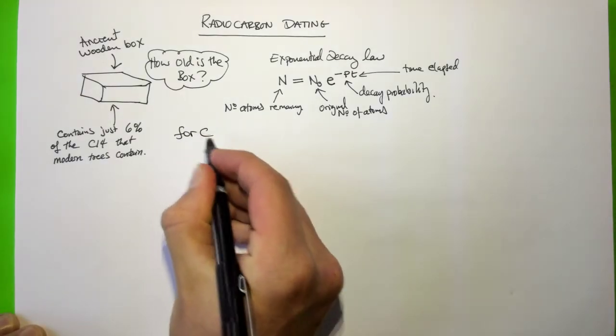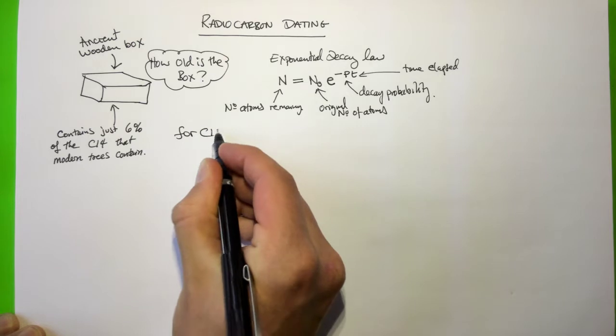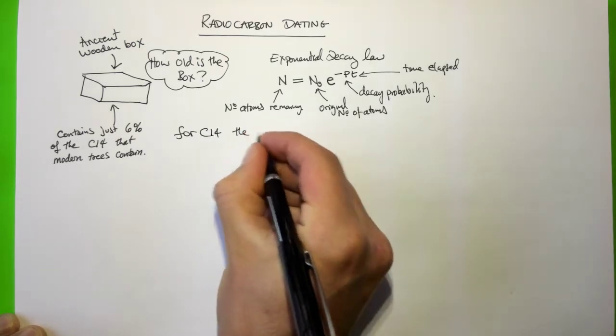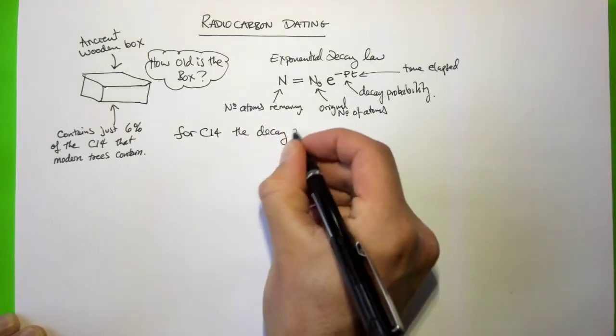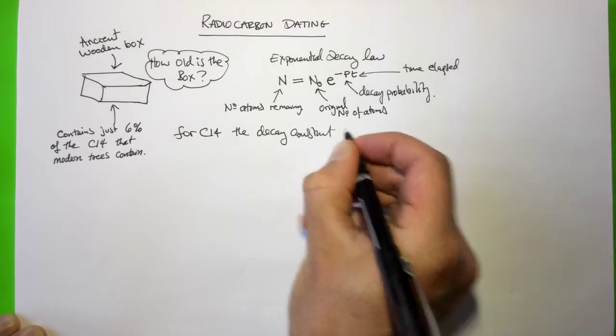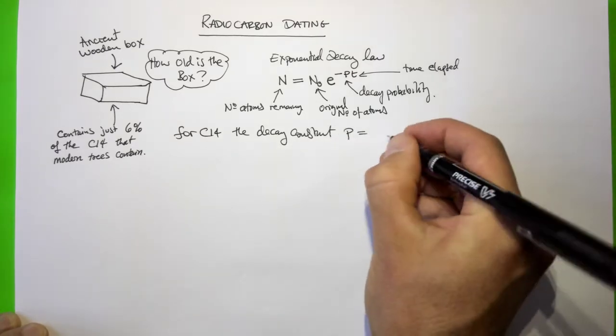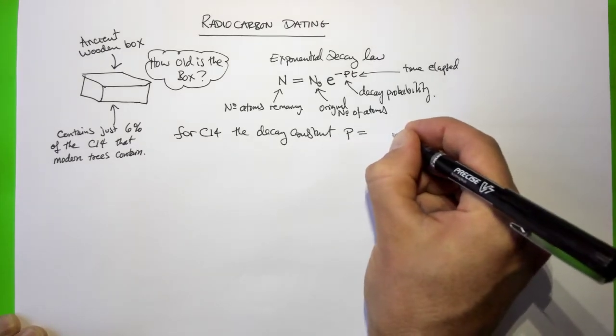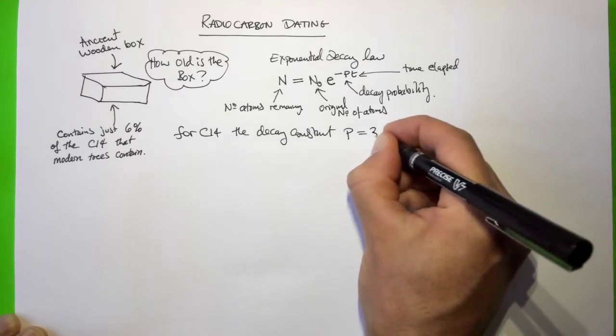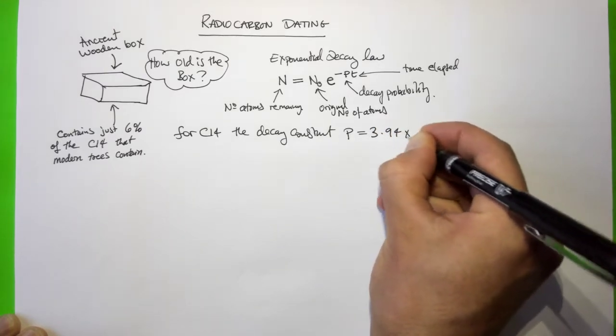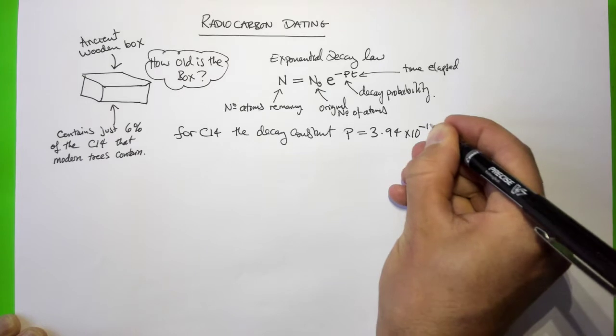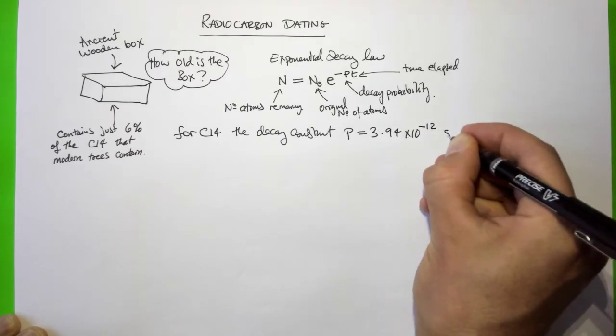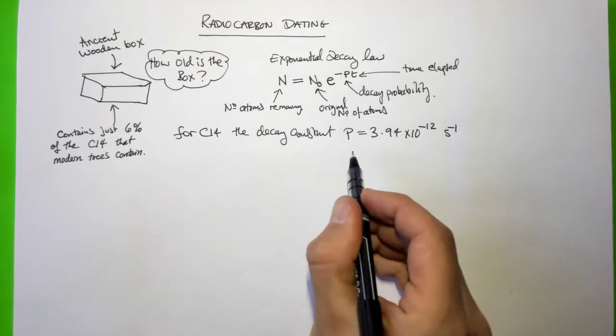So for carbon-14, the decay constant P is very small, or at least it sounds very small when you write it down. It's 3.94 times 10 to the minus 12 per second.